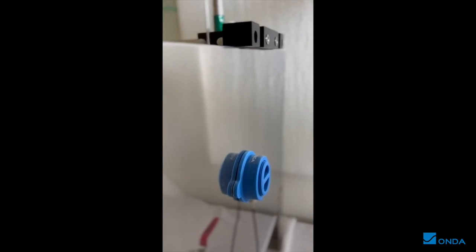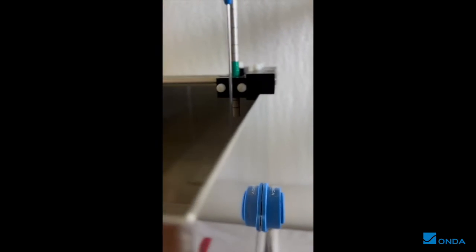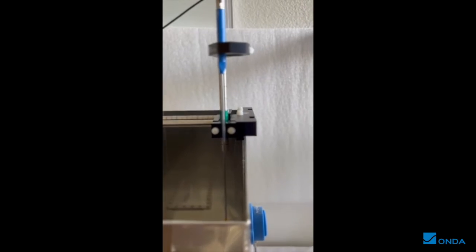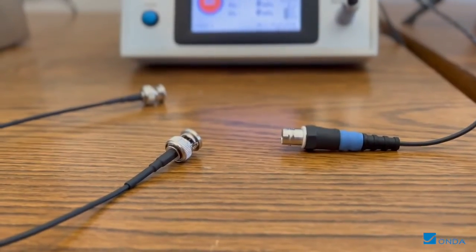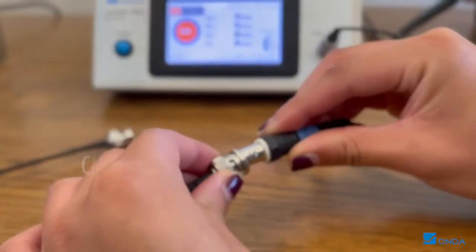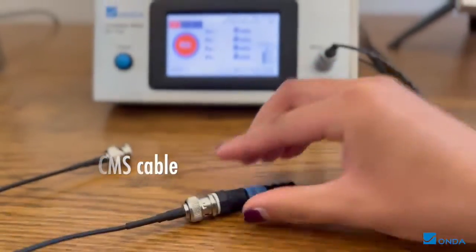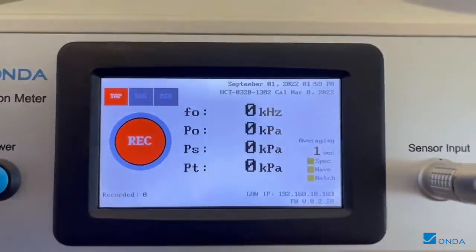To ensure the measurement accuracy, calibrate the CMS with the HCT320 measuring inside the tank. Connect the CMS to the MCT2000 meter. Start a TAP session and acquire a data point.